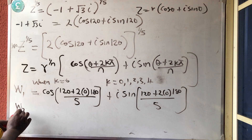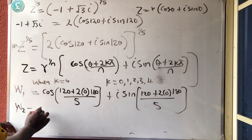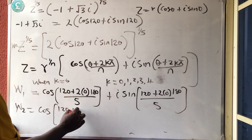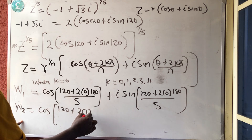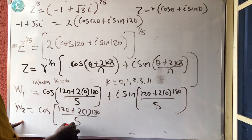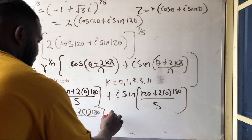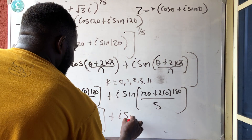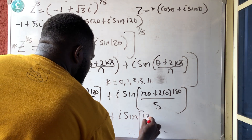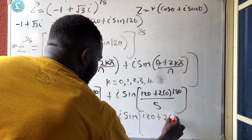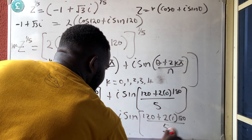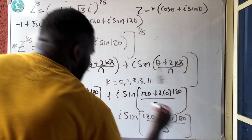The second one, W2, is equal to: cos(120 + 2 × 1 × 180) over 5, plus i sine(120 + 2 × 1 × 180) over 5. K is now 1. That is W2.